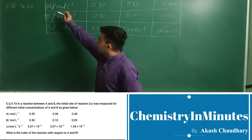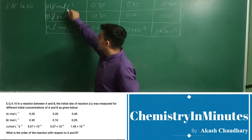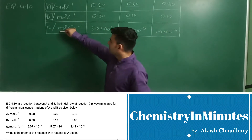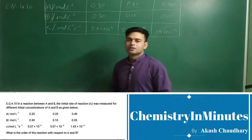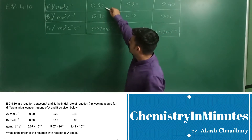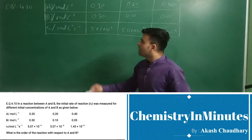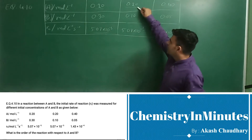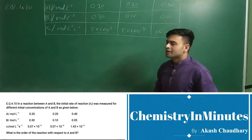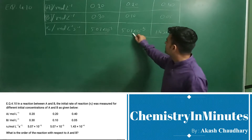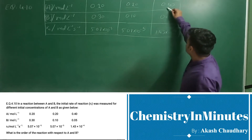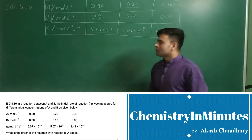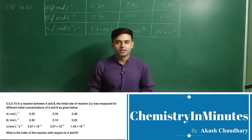The table is on the board. In the first row there is concentration of A in mole per liter. In the second row there is concentration of B in mole per liter, and in the third row there is rate of reaction in mole per liter per second. When concentration of A is 0.20 and B is 0.30, the rate is 5.07×10⁻⁵. When A is 0.20 and B is 0.10, the rate is 5.07×10⁻⁵. When A is 0.40 and B is 0.05, the rate is 1.43×10⁻⁴ mole per liter per second.